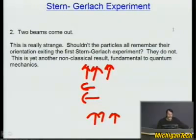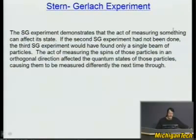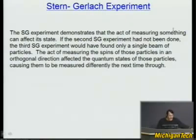This is a very non-classical result and fundamental quantum mechanics. The Stern-Gerlach experiment demonstrates that the act of measuring something can affect its state. They all started as spin up; we then measured them spin to the side. That measurement affected the up-down spin — they didn't remember they were all spin up. The act of measuring spins in an orthogonal direction affects the quantum states of those particles, causing them to be measured differently the next time through.